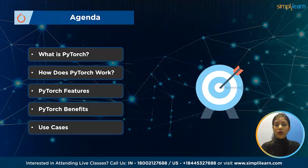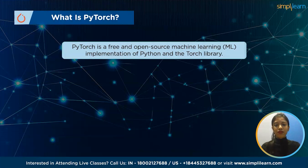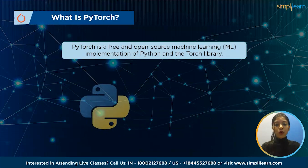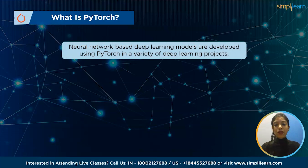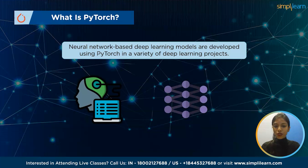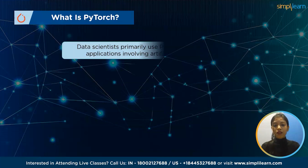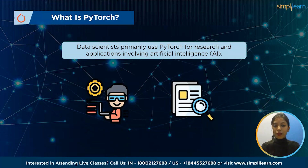PyTorch is a free and open-source Python and Torch machine learning implementation. Deep learning models based on neural networks are currently being developed and trained in a variety of deep learning projects using PyTorch. Because of its ease of use, PyTorch is increasingly being used to create artificial neural network models, and is used by data scientists for artificial intelligence research and applications.